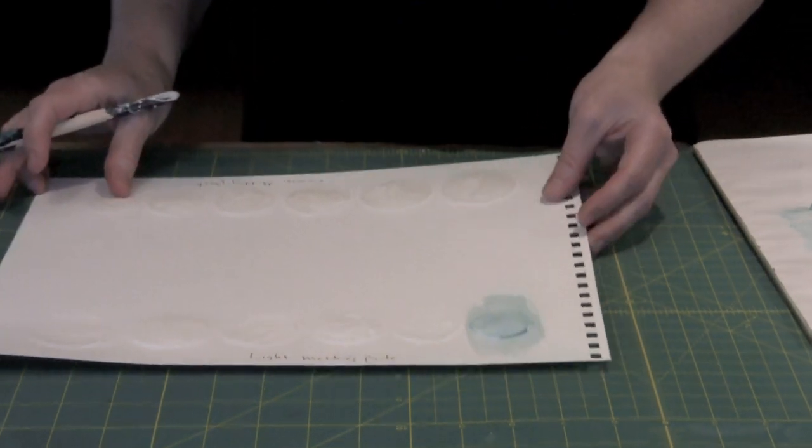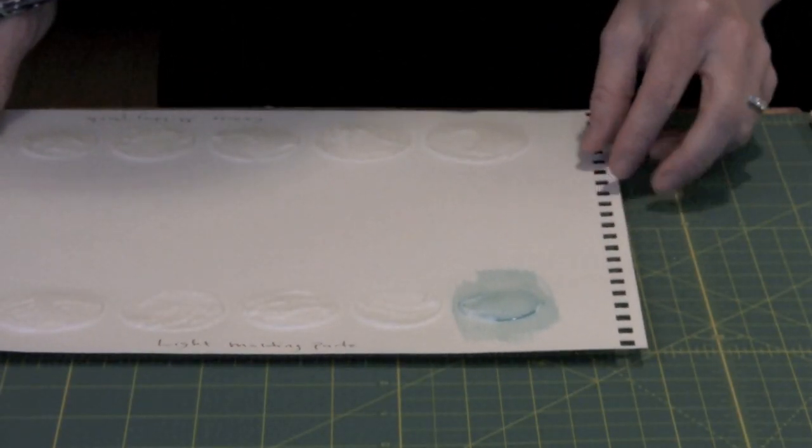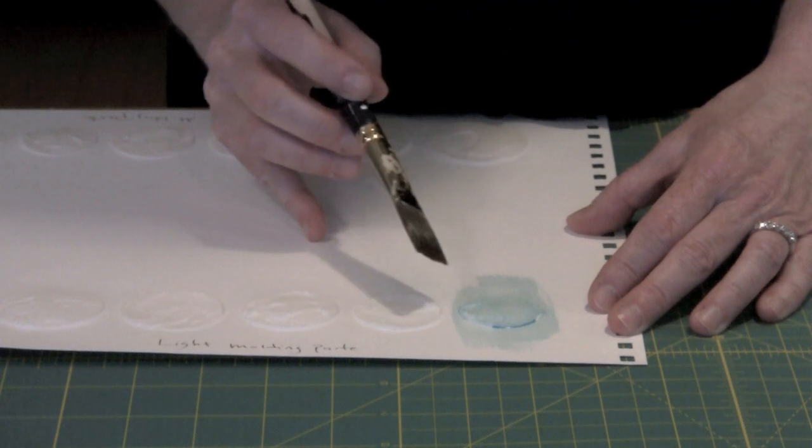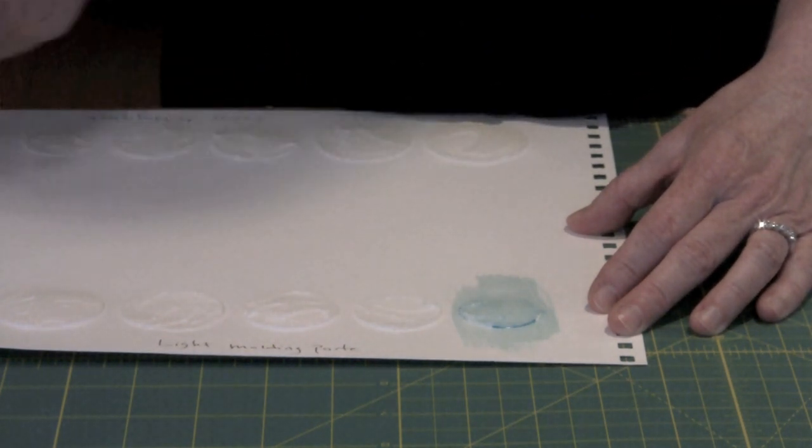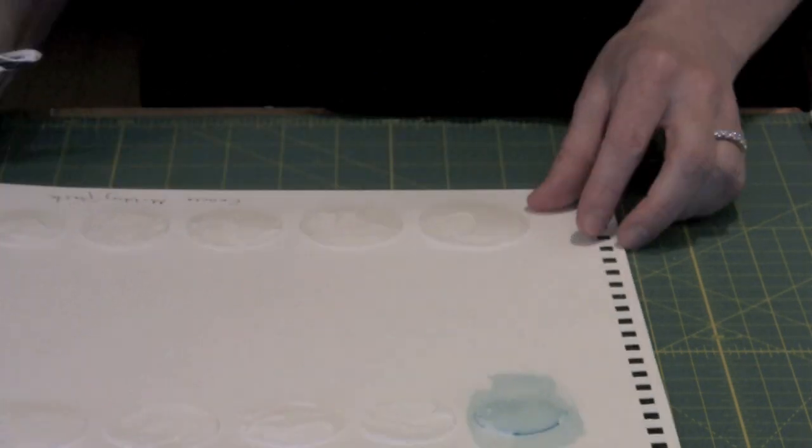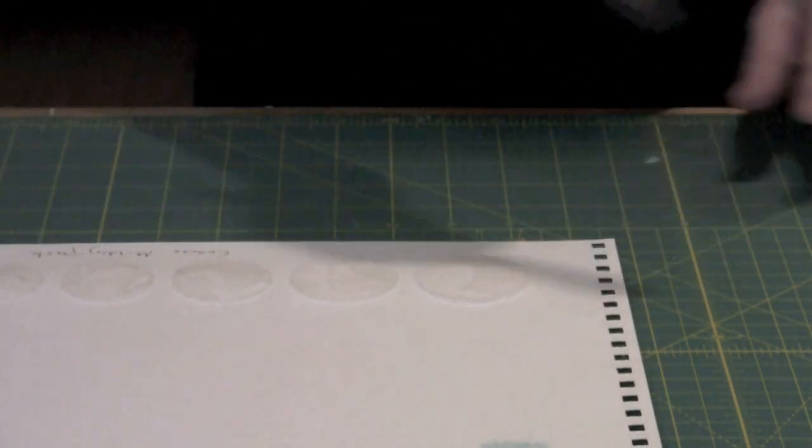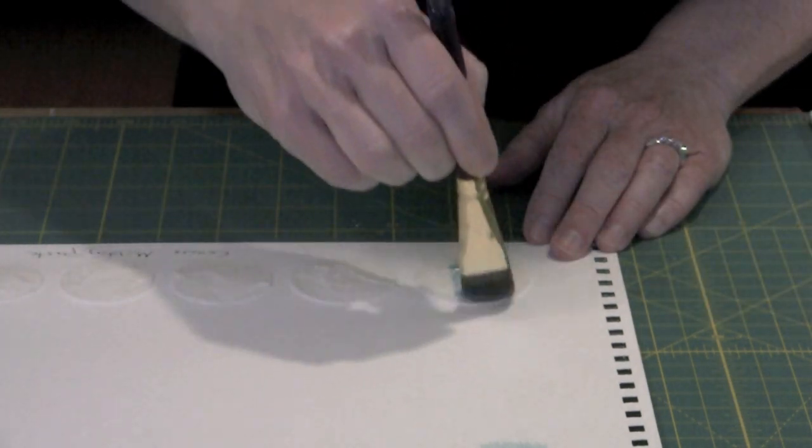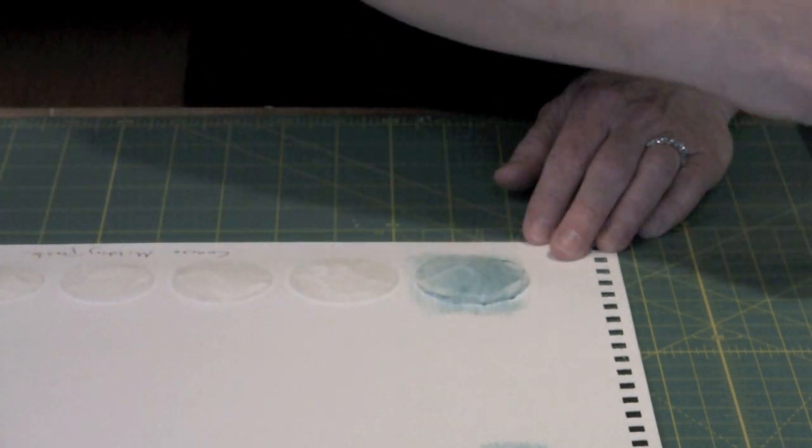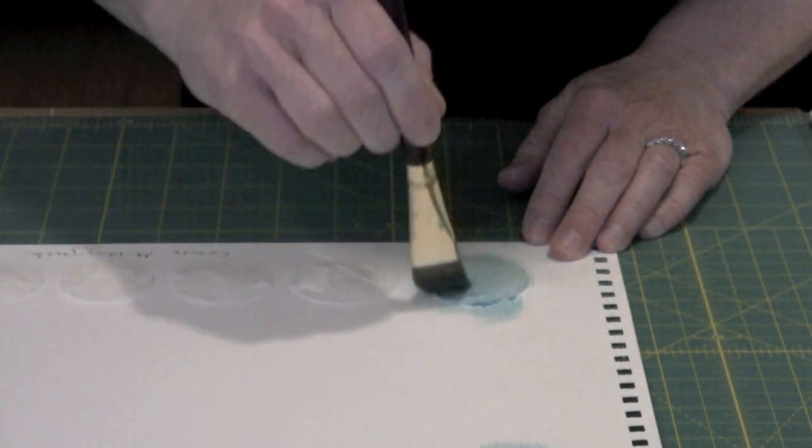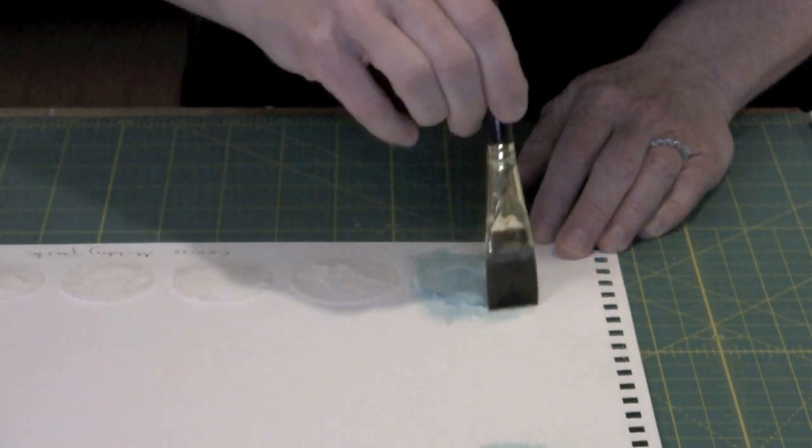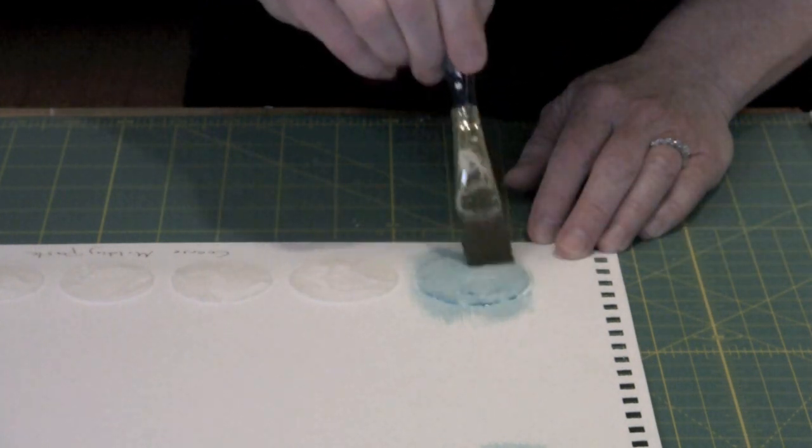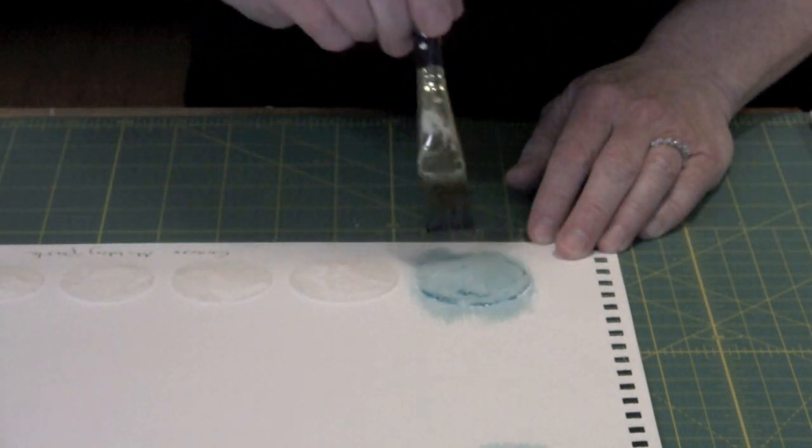The interesting thing here is that you can see where the molding paste is not smooth. Some of the color has caught in the grooves and in the peaks on the molding paste. This is the light molding paste. Now I'm going to do the same thing over the coarse molding paste. This actually grabs the paint quite a bit differently. You can definitely see there's more texture and where the paint accumulates.